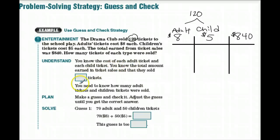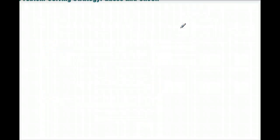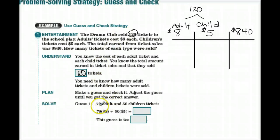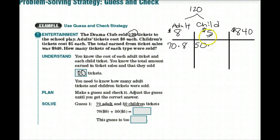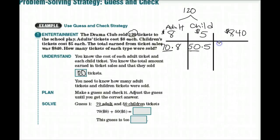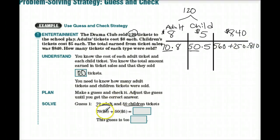We know the cost of each adult and child ticket. The total tickets sold is 120. We need to find how many of each type were sold. First, let's guess 70 adults and 50 children. So 70 adult tickets times $8, and 50 children's tickets at $5 each. Does that equal $840? Well, 70 times 8 equals 560, and we add 50 times 5, which is $250. Together that equals $810.